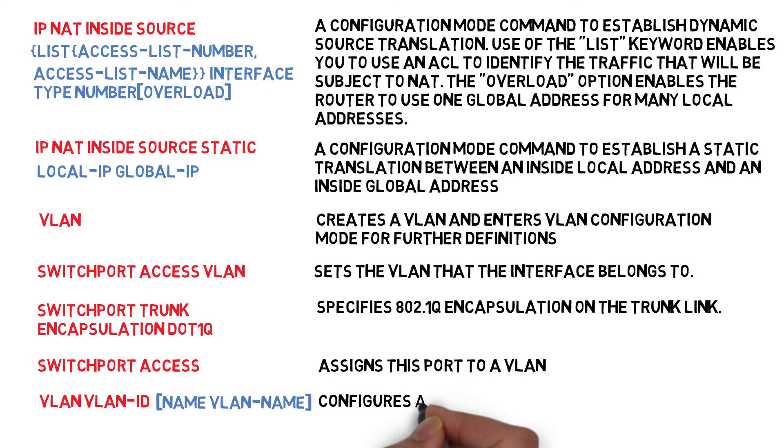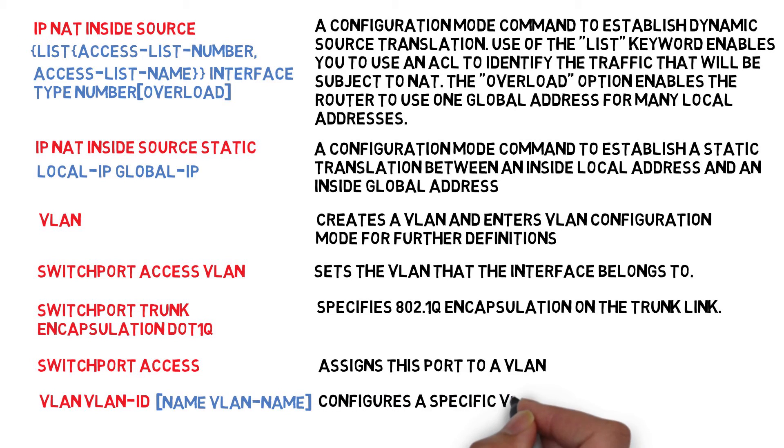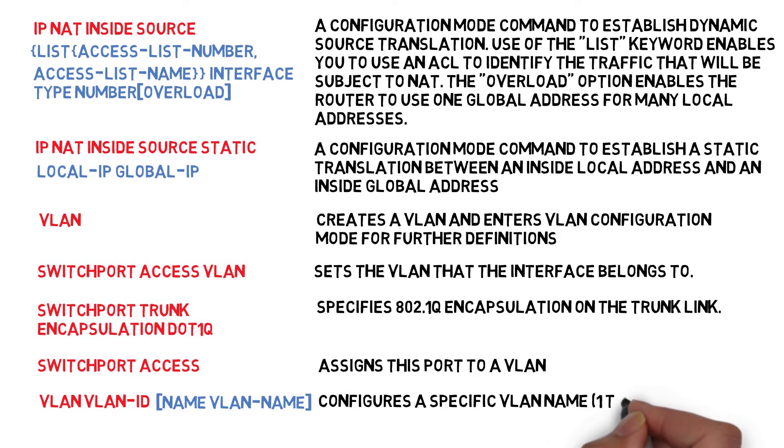VLAN — VLAN ID — name VLAN-name. Configures a specific VLAN name, 1 to 32 characters.